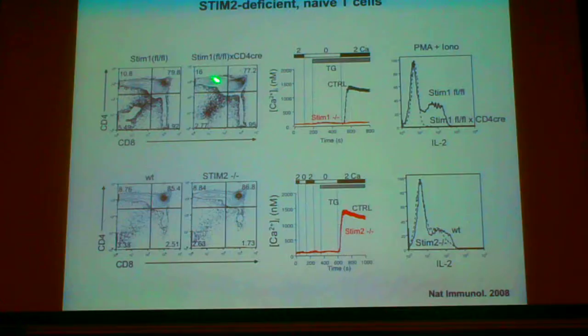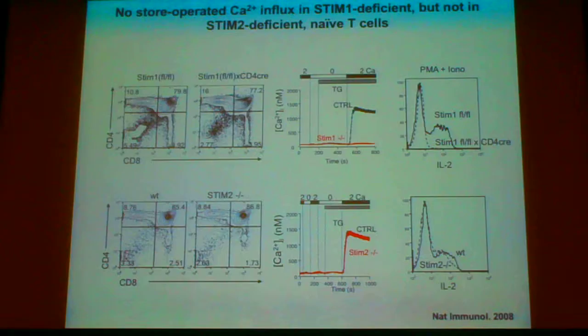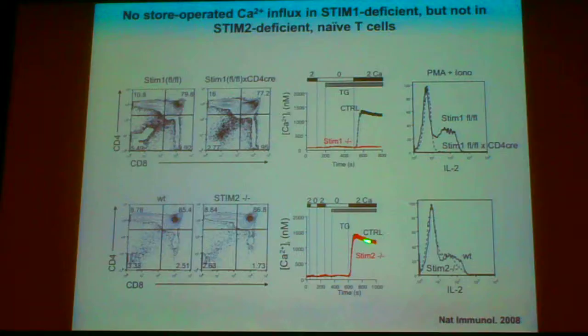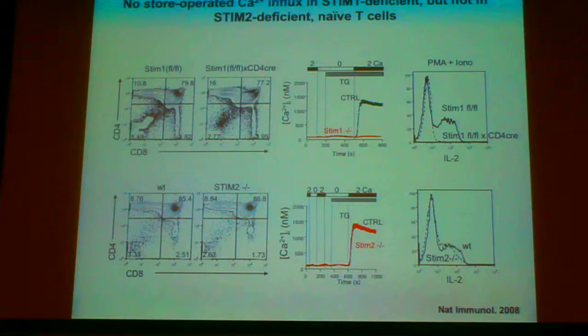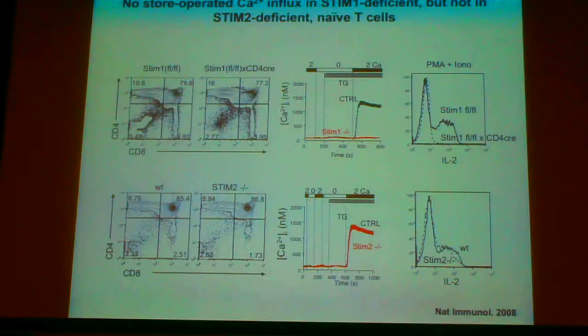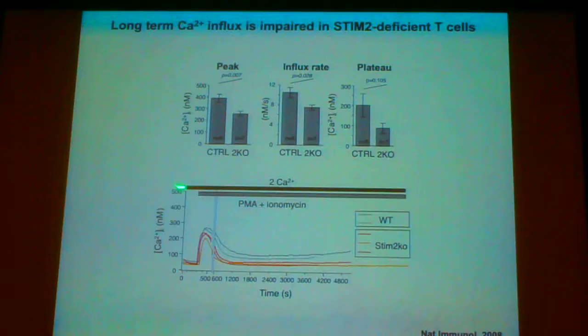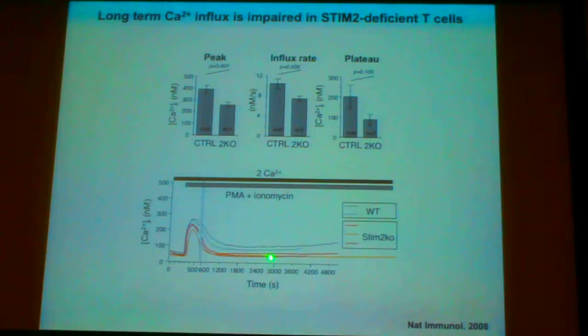In contrast to STIM1 deficiency, STIM2-deficient naive T cells show normal store-operated calcium influx and IL-2 production, as well as normal thymic development. However, different from STIM1 deficiency, STIM2 deficiency retained a lower plateau of long-term calcium influx, especially after 20 minutes.